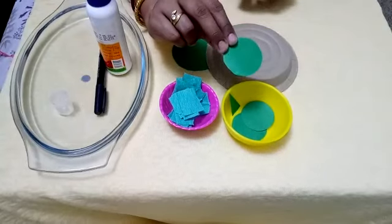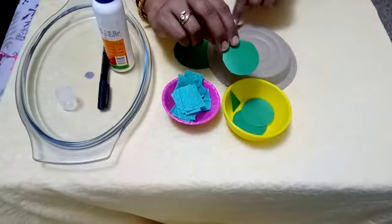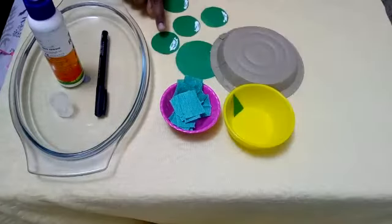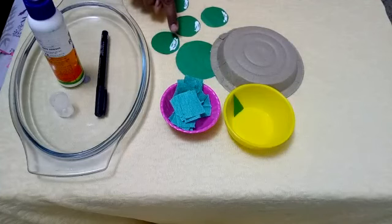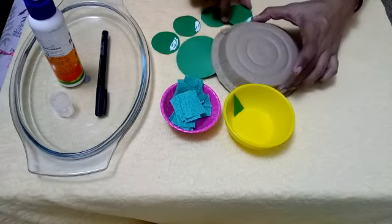Now I am going to paste these small circles around the paper plate to make the legs of the turtle. I have applied the glue over these portions and now I am going to paste them on.